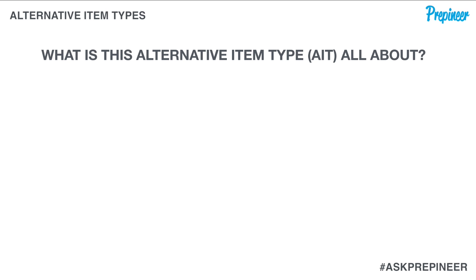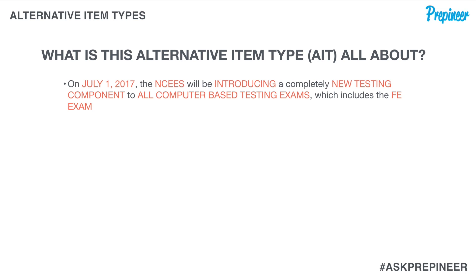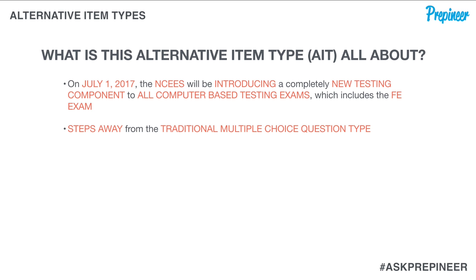So what is this alternative item type all about? On July 1st of this year, the NCEES will be introducing a completely new testing component to all computer-based testing exams — those being the Fundamentals of Engineering exam, which is the one we're concerned with, the FE exam, as well as the Fundamentals of Surveying exam. This new testing component is referred to as the alternative item type, or the acronym AITs.